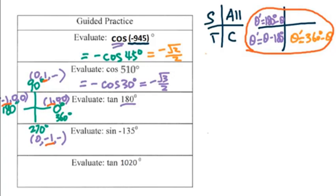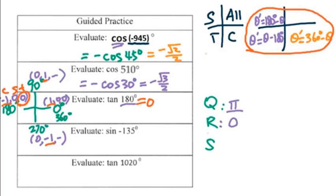Therefore, for tangent 180 degrees, you can see the answer is 0. If you want to do QRS, that's fine too. Since 180 degrees can be counted as either the second or third quadrant, let's do the second quadrant. The reference angle is 0, and in the second quadrant tangent will be negative, so we get negative tangent 0, which is still 0. For 180 or 270 degrees, you can count any adjacent quadrant.